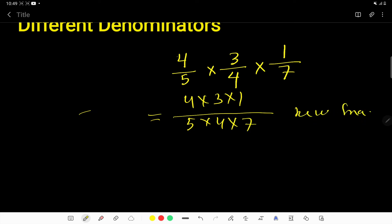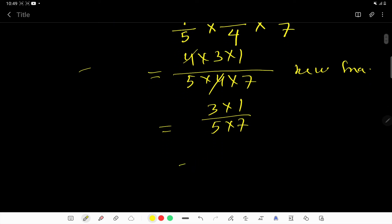Now in the third step, you have to simplify the fraction. Simplifying means you reduce the fraction by canceling the common factors. Here you can easily cancel this 4 and this 4, so you're getting 3 times 1 and 5 times 7. Basically you're getting 3 over 35.